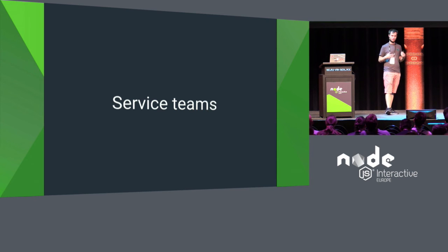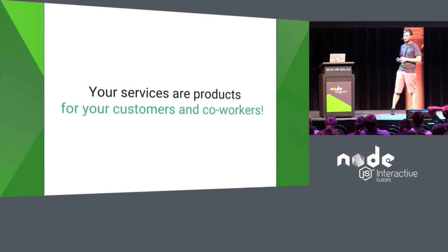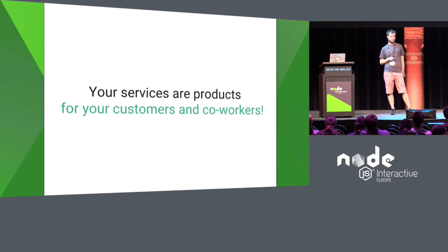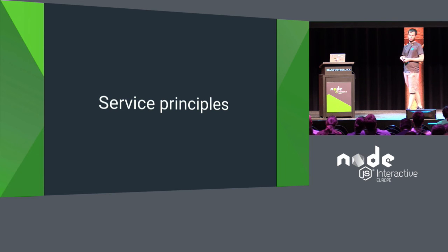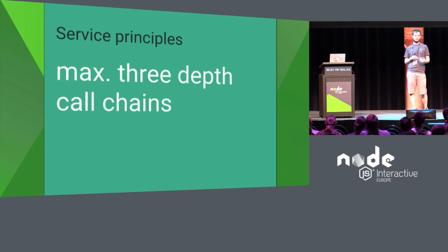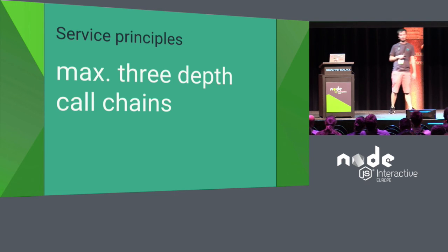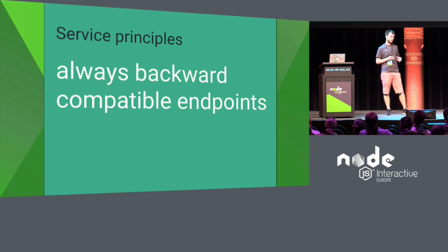As you break your application into smaller services and service teams, team communication becomes increasingly important. Your services are effectively products for your co-workers — if a service you depend on has lots of issues or slow responses, it affects your service too. To support this, we started building service principles. One example: a maximum of three depths in synchronous call chains. This is good not just for response time but also as a limit on complexity.